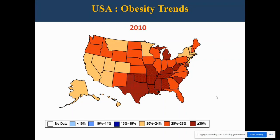At 2010, several new additional categories had to be added. The original 10 to 14% range was not there anymore — it was replaced by the greater than 30% prevalence category. Most of the states were now at least 20% and higher.